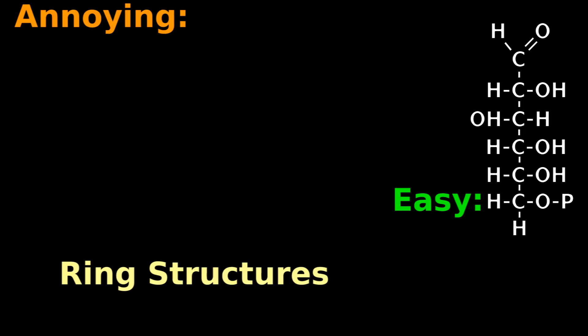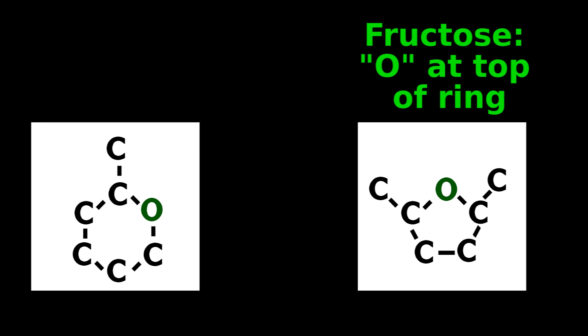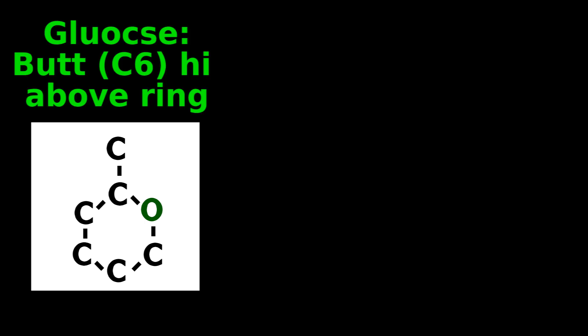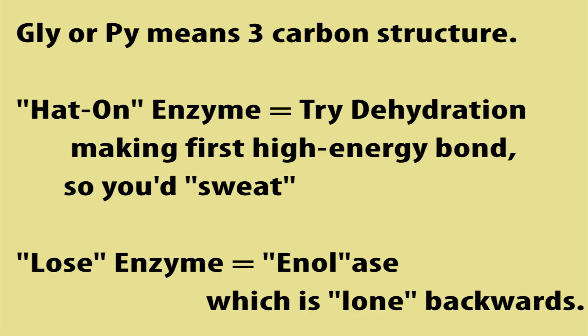Ring Structures: If your exam is especially annoying, instead of a linear carbon chain, you might see ring versions of glucose and fructose. If it is fructose, there is an O at the top of the ring. Glucose sticks its butt high in the air, so the highest carbon is 6 — count down: 5, 4, 3, 2, 1.